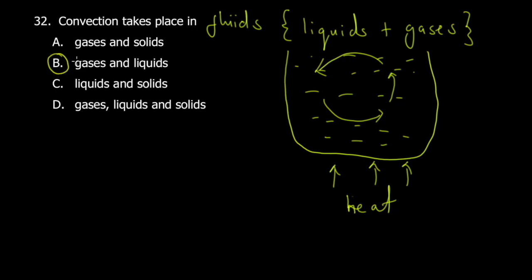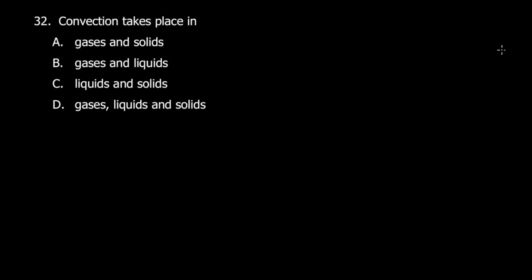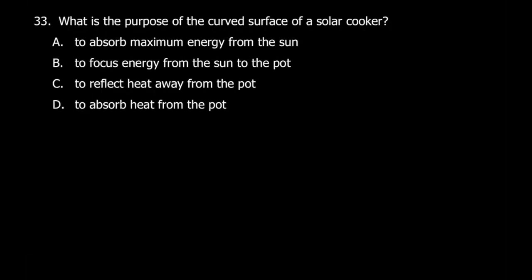Let's quickly move to question 33. What's the purpose of a curved surface in a solar cooker? To absorb maximum energy from the sun, to focus energy from the sun to the pot, to reflect the heat energy away from the pot—this one is definitely not—or to absorb heat from the pot. If you're cooking using a solar cooker, you want as much heat as possible to get to the pot.